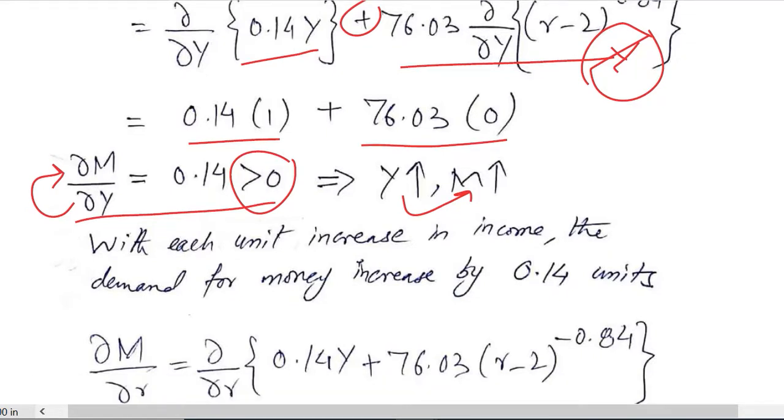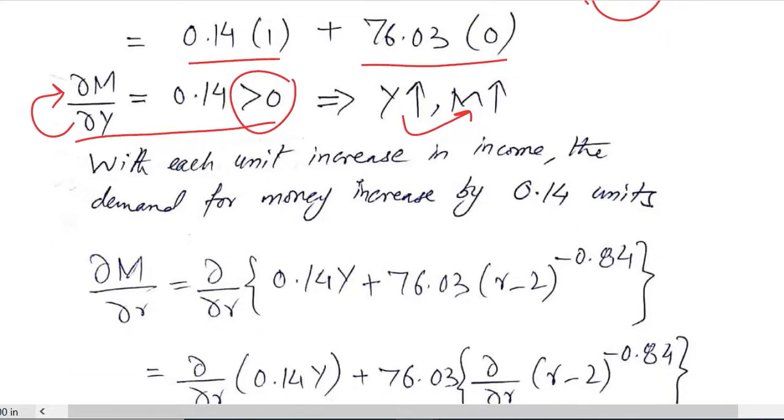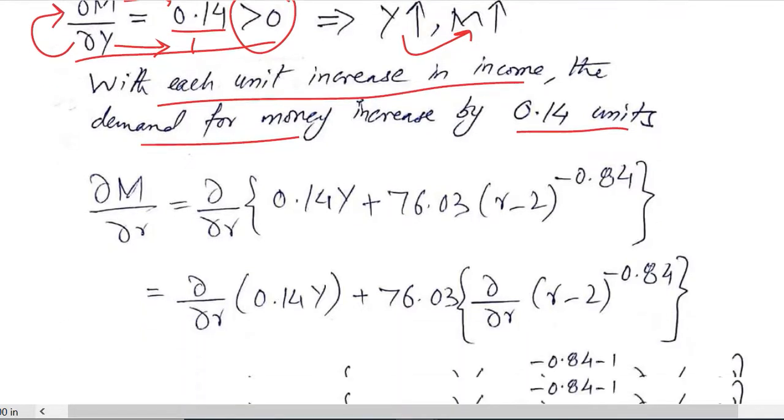Now the quantification should be interpreted because below is 1 in every ratio, so it means that 1 unit increase in income, which is in the denominator, there will be 0.14 unit increase in the demand for money. So there is a positive relationship and we have quantified it as well.